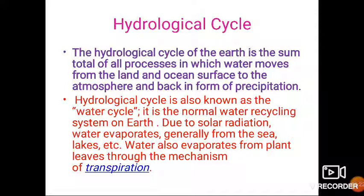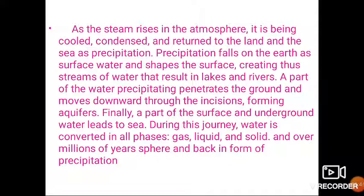Due to solar radiation, water evaporates from water bodies like seas or lakes, and also from plant leaves through the process of transpiration. This steam rises into the atmosphere, where it gets cooled and condensed, and is returned to the land in the form of precipitation. Precipitation is very important as it shapes the earth's surface and is useful in geological processes, especially weathering and erosion.